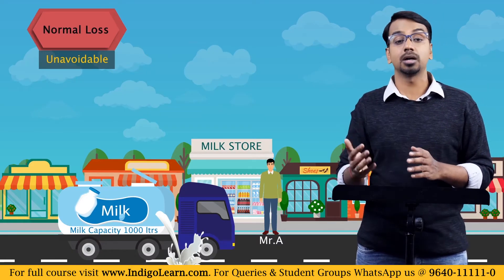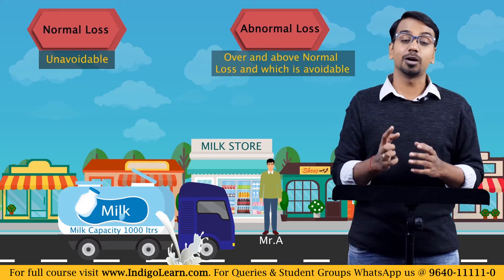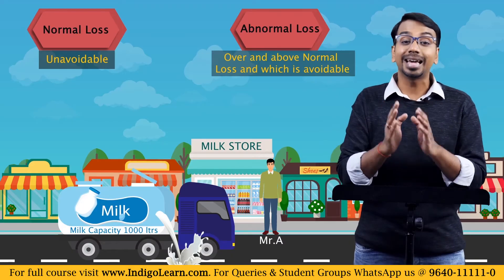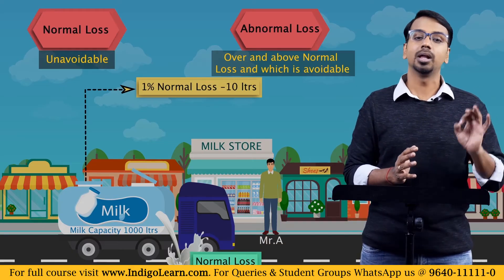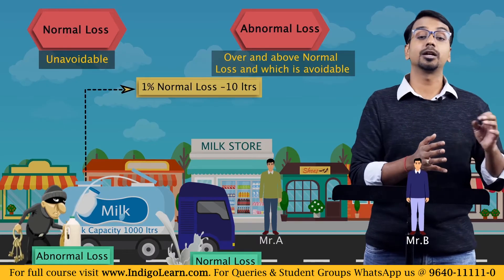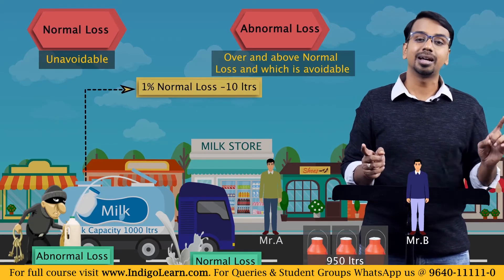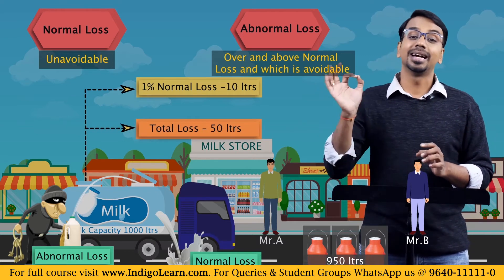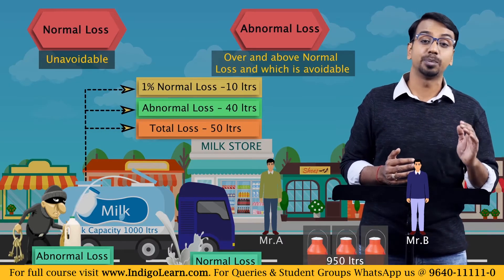Any loss which is beyond the normal loss is called abnormal loss. In the milk industry, say 1% of loss is considered normal. When Mr. A transported 1000 litres of milk, 10 litres lost during transit is normal loss. But if someone stole milk and Mr. B ended up receiving only 950 litres, the total loss is 50 — out of which 10 litres is normal and the balance 40 litres is abnormal loss.